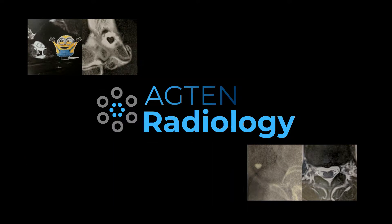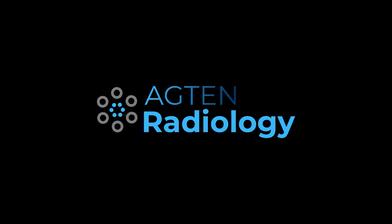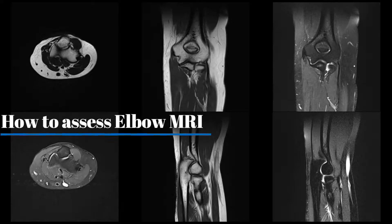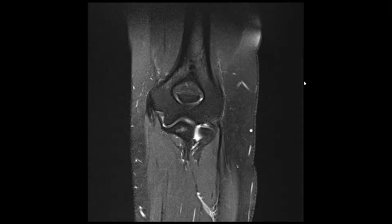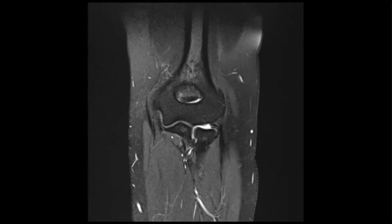In today's video I show you the order I use when reporting elbow MRI. When I assess elbow MRIs I do not use a structured report or a specific template, but I still have my structure. What I do is always start off with the bony structures, so I have a look at all the different bones.